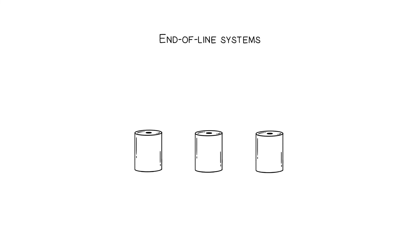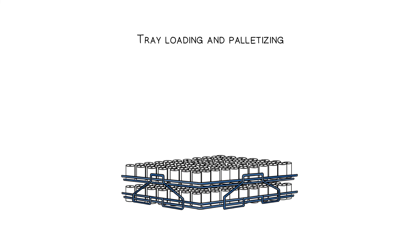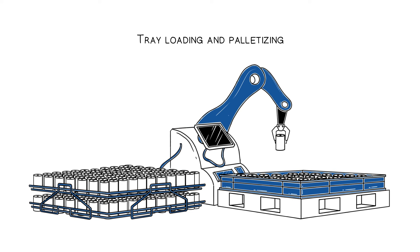The end-of-line systems finally pack the cans into trays or buffer them before they enter the assembly area.